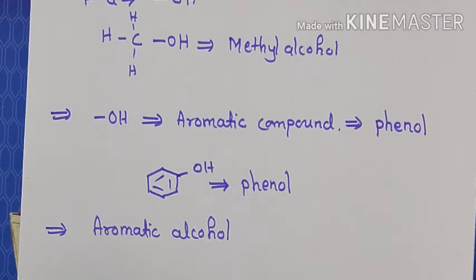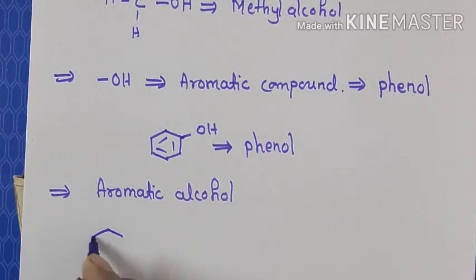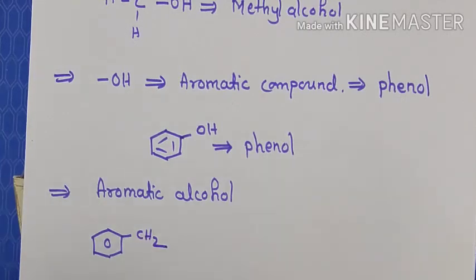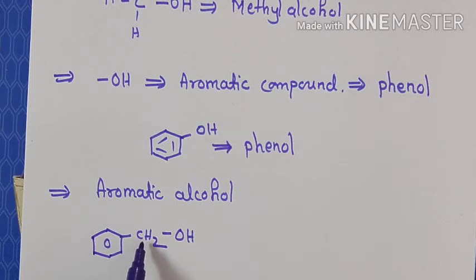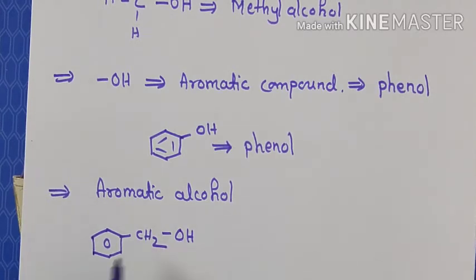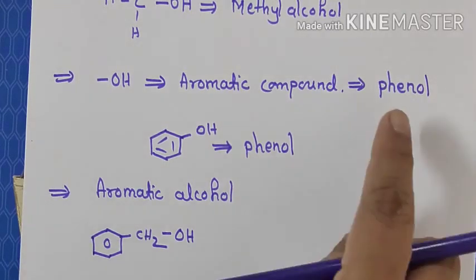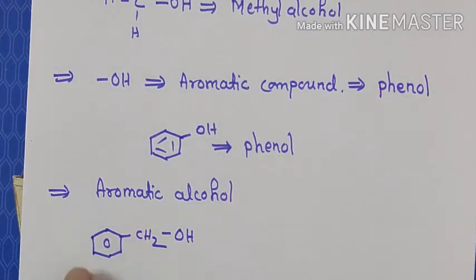What is aromatic alcohol? Suppose I have a benzene ring — which is aromatic. To this, a CH2 is attached, and my functional group OH is attached to this carbon. This carbon is not an aromatic carbon; it is a saturated aliphatic carbon. So this will be called aromatic alcohol. When OH is attached to a carbon which in turn is attached to the aromatic ring, it is called aromatic alcohol — it is still an alcohol.